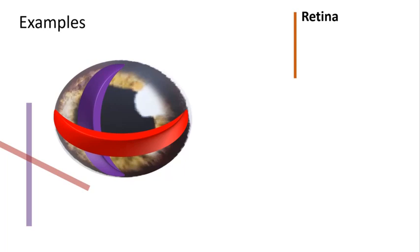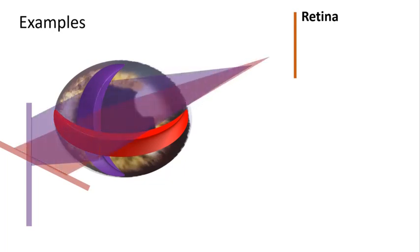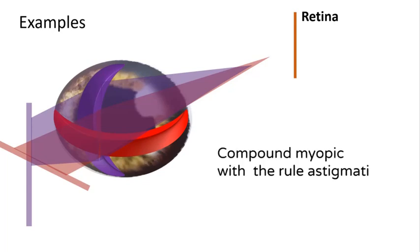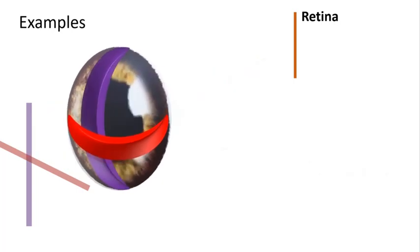Let's do a couple of examples. Feel free to pause and work out the answer before I reveal it. In this case: step one, no meridian focuses on the retina, so it's either compound or mixed. Step two, both focus on the same side and both are in front of the retina, so it is compound myopic. Step three, the vertical meridian is more curved, so it is with the rule. This is a case of compound myopic with-the-rule astigmatism.